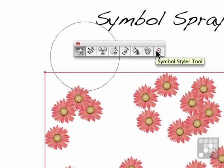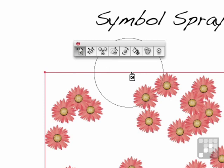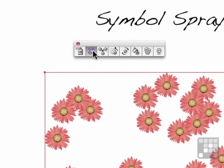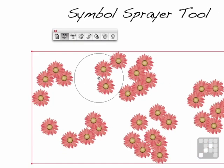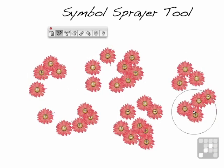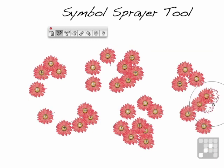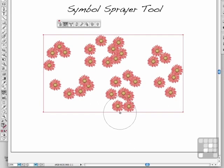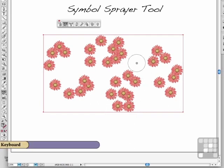Once you've drawn them, you have the ability to control them. The first one is called the Symbol Shifter, and what it does is it shifts them — it moves them. If you want to move them around, move them around. You'll notice I'm moving several at a time because of the size of my brush. Maybe I need a smaller brush to get just one. Use your left and right bracket keys to adjust brush size.